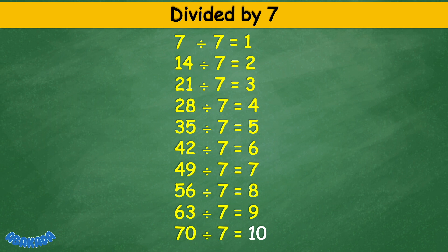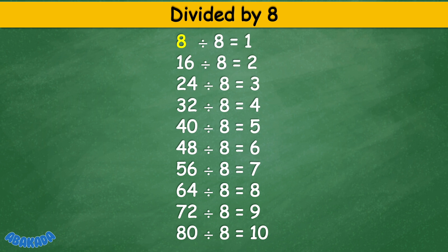Divided by 8: 8 divided by 8 equals 1, 16 divided by 8 equals 2, 24 divided by 8 equals 3, 32 divided by 8 equals 4, 40 divided by 8 equals 5, 48 divided by 8 equals 6, 56 divided by 8 equals 7, 64 divided by 8 equals 8, 72 divided by 8 equals 9.